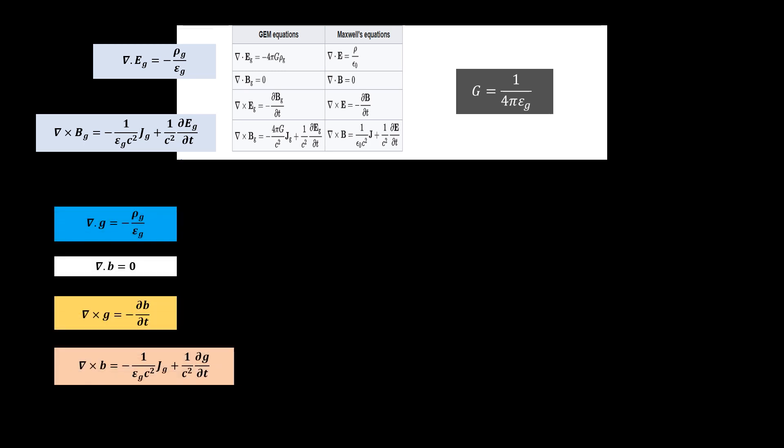I would like to change the notations. E subscript g is conventionally the gravitational field little g, so let us just use little g since we are very familiar with this notation. Likewise, let us use little b to represent the magnetic components of gravity. Therefore, the Maxwell's equations become these.